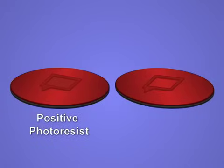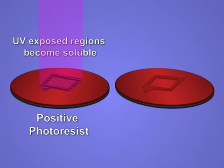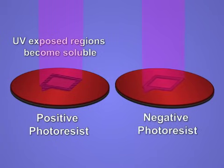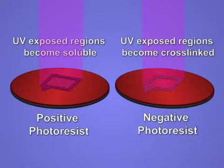First, positive resist becomes soluble upon exposure to UV light. In contrast, the exposed regions of negative resist become cross-linked and are insoluble.